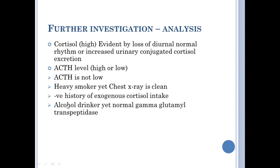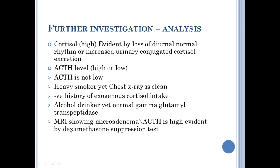From the history, he is an alcohol drinker, but investigation showed a normal gamma-glutamyltranspeptidase level, so we can rule out alcohol-induced pseudo-Cushing syndrome. At the end, we did an MRI and measured ACTH level. The MRI showed a microadenoma, and ACTH was found to be elevated, as evidenced by the dexamethasone suppression test, which I will explain now.